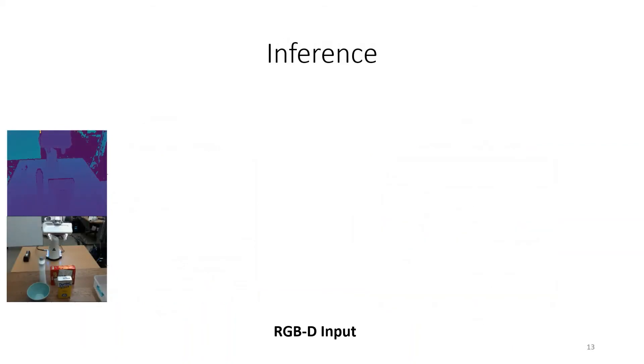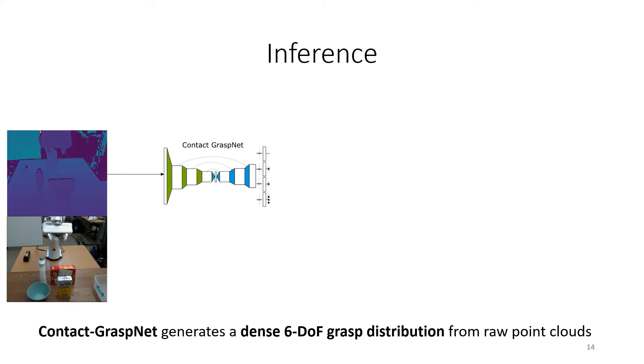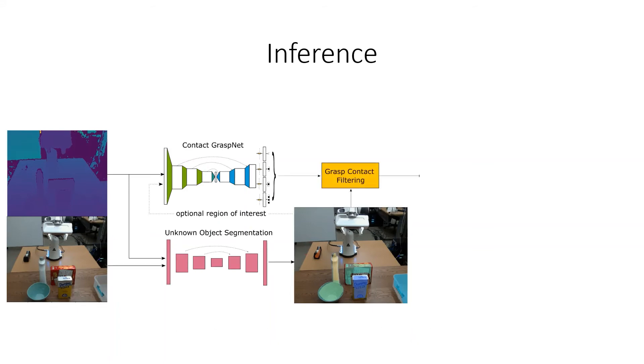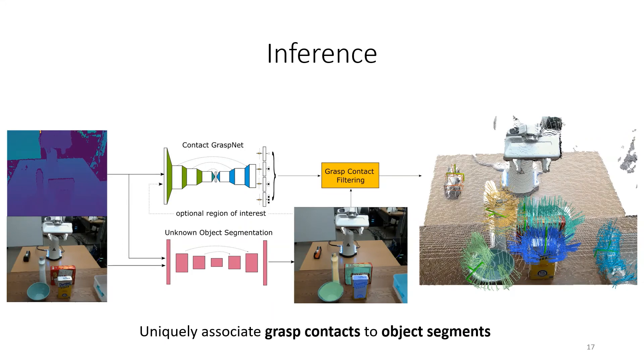But now to the real experiments. At inference time, Contact-GraspNet can generate a dense 6DOF grasp distribution from raw point clouds. However, to avoid predicting grasps in the background, it is beneficial to use unknown object segmentation in parallel. It can optionally be used to infer local 3D regions of interest and can be used to uniquely associate grasp contacts to object segments by just filtering the contacts. This way we can generate diverse 6DOF grasps for each object while avoiding collisions. The most confident grasps are shown in bold here.